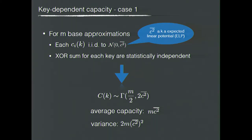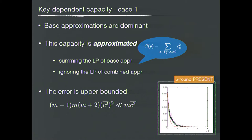Here, the second parameter is the average square correlation, also known as expected linear potential. For each key, the XOR sums of the base approximations are also statistically independent. With these two conditions, we can derive that the capacity of the m-dimensional linear approximation follows a gamma distribution with specific parameters, and the average value and variance are given accordingly.